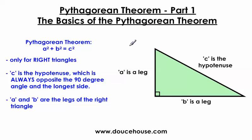Hi everybody, how you doing? This is Mr. Douse. In this video I'm going to talk about the basics of the Pythagorean Theorem. The Pythagorean Theorem is this equation right here, a squared plus b squared equals c squared.